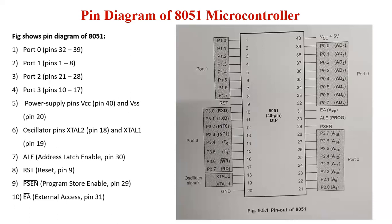Next are the power supply pins: VCC at pin number 40 and VSS at pin number 20, which is GND. The 8051 operates on a DC power supply of plus 5 volts with respect to ground. The plus 5 volt is connected to pin VCC and ground to pin VSS, with a rated power supply current of 125 mA.